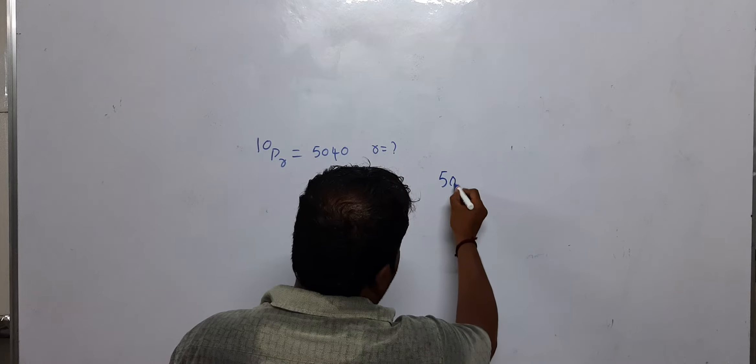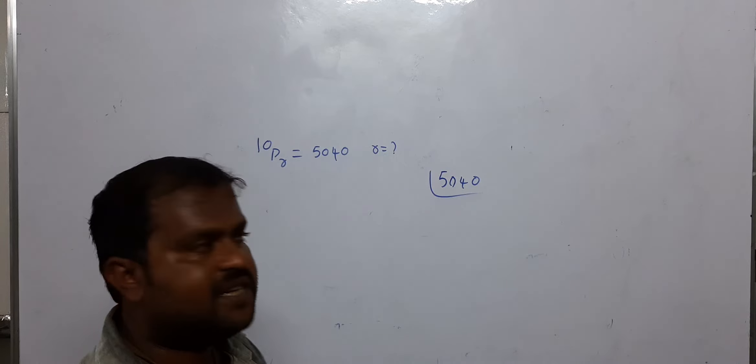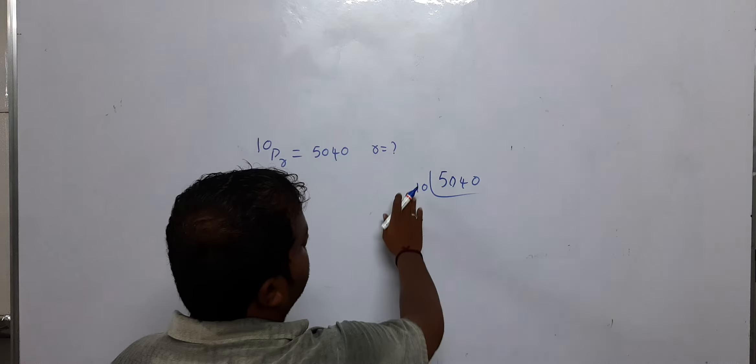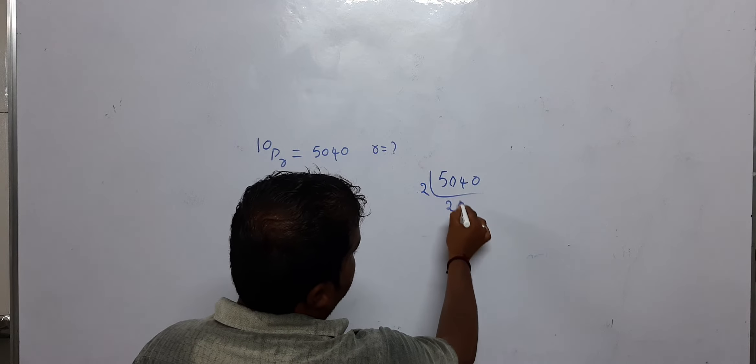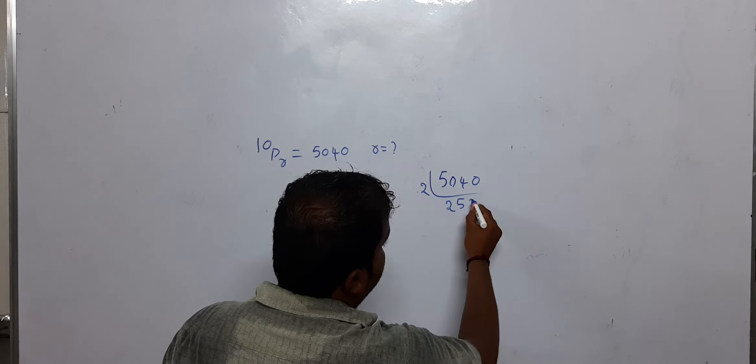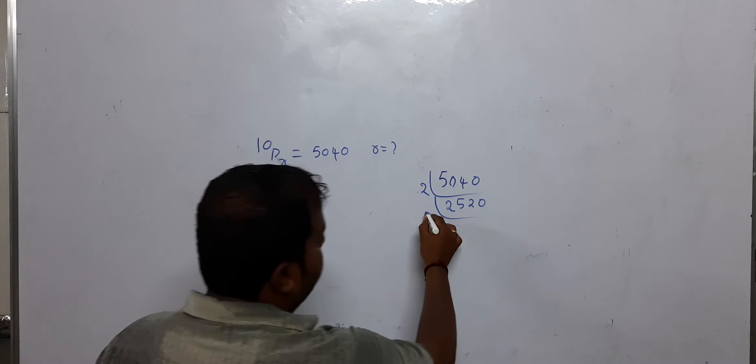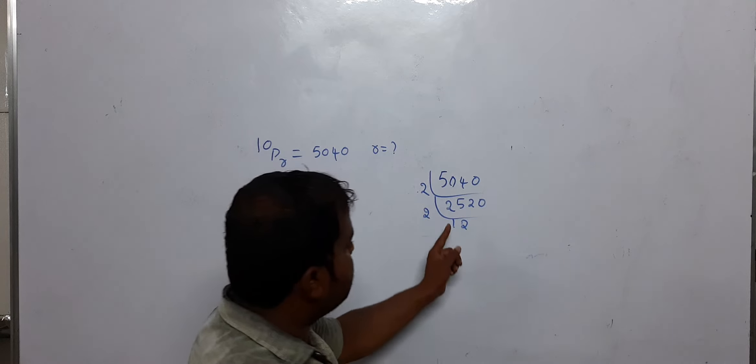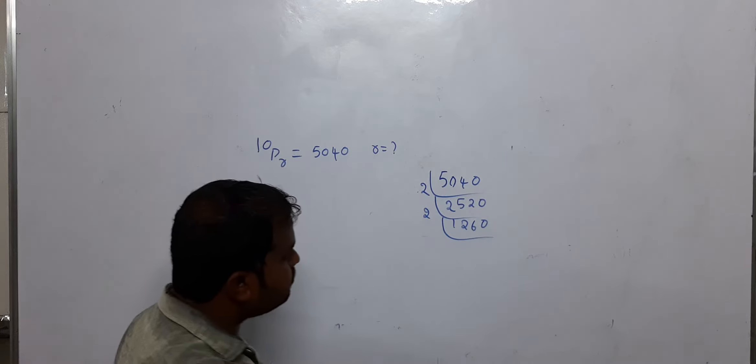First we need to find the value of R. To solve this, I'll find the LCM. Starting the factorization: 5040 divided by 2 equals 2520, divided by 2 again equals 1260.